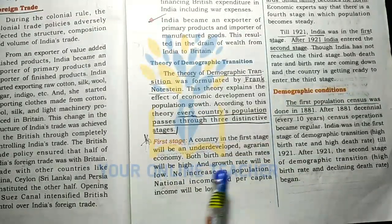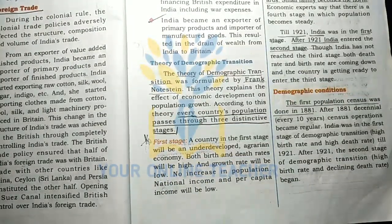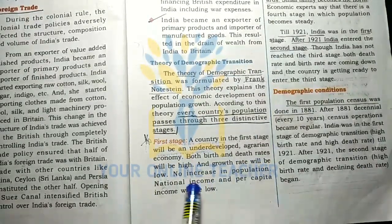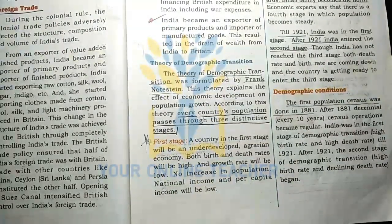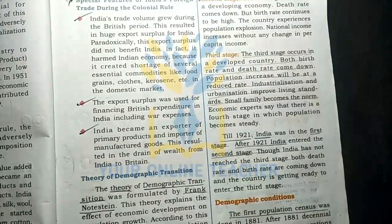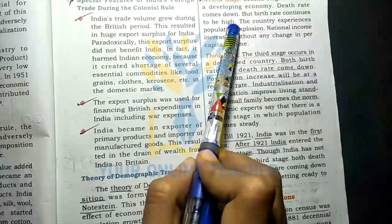Both birth and death rates will be high, and growth rate will be low. Population increase and national per capita will be low. The second stage is the development economy, and the death rate will be low.